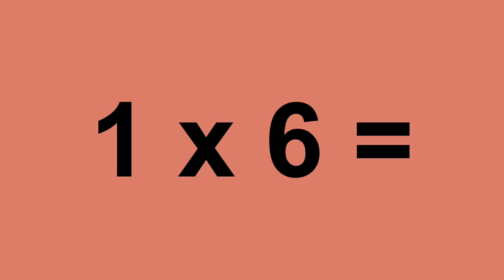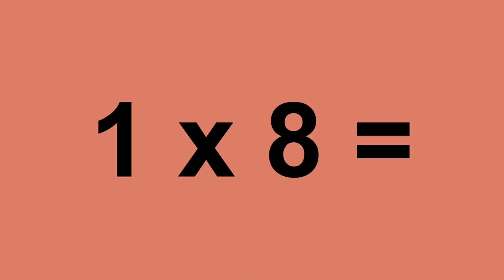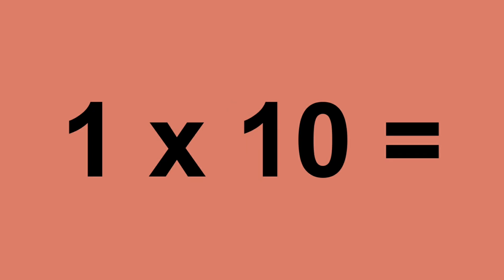One times five equals five. One times six equals six. One times seven equals seven. One times eight equals eight. One times nine equals nine. One times ten equals ten.